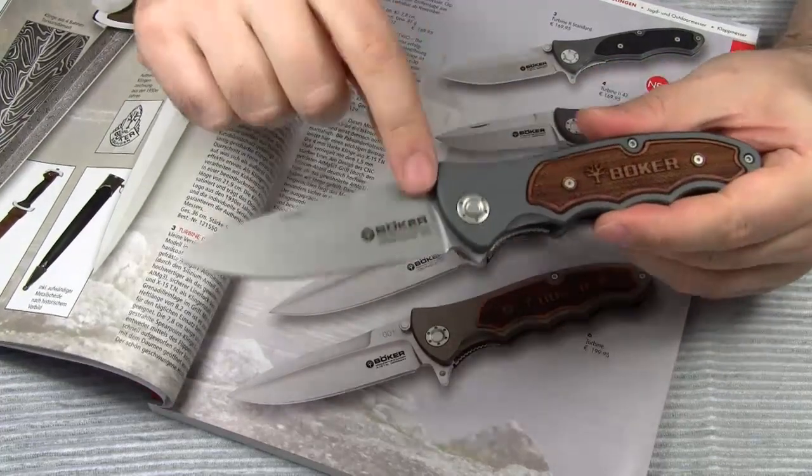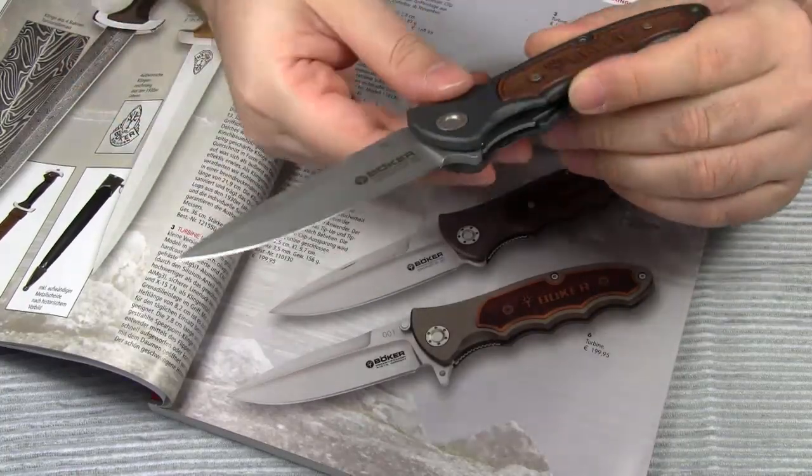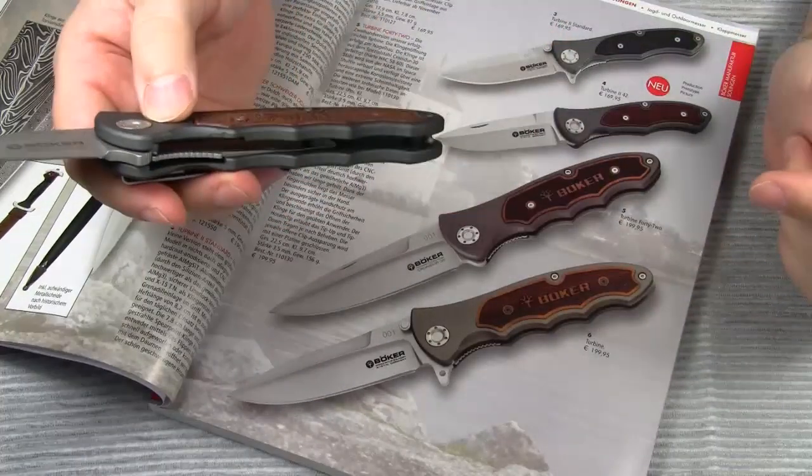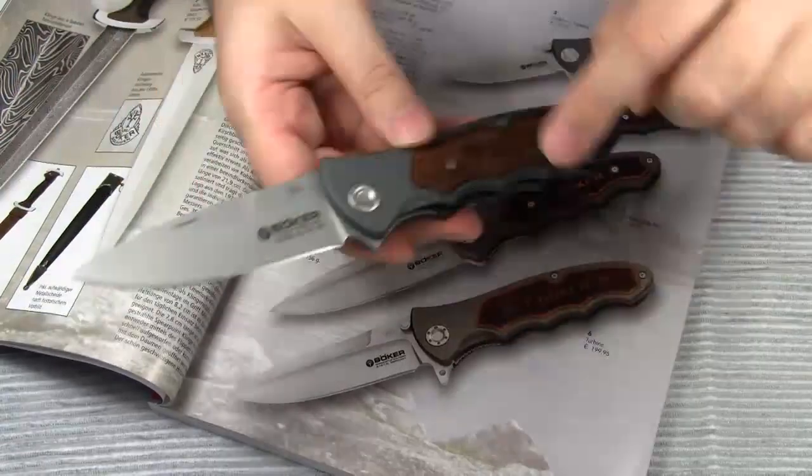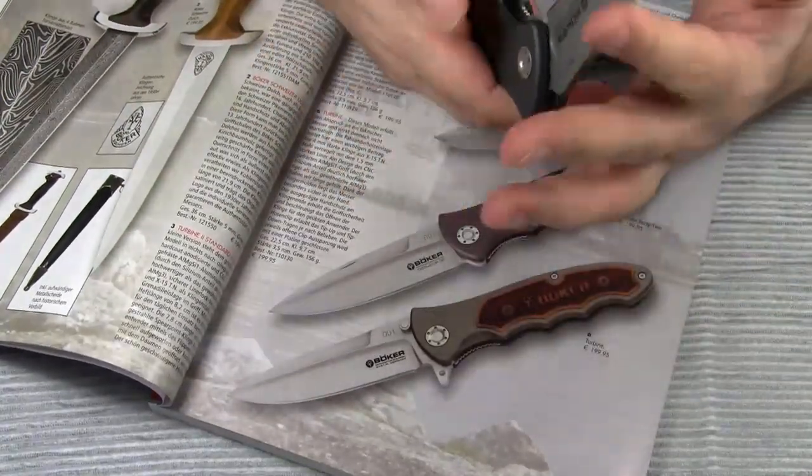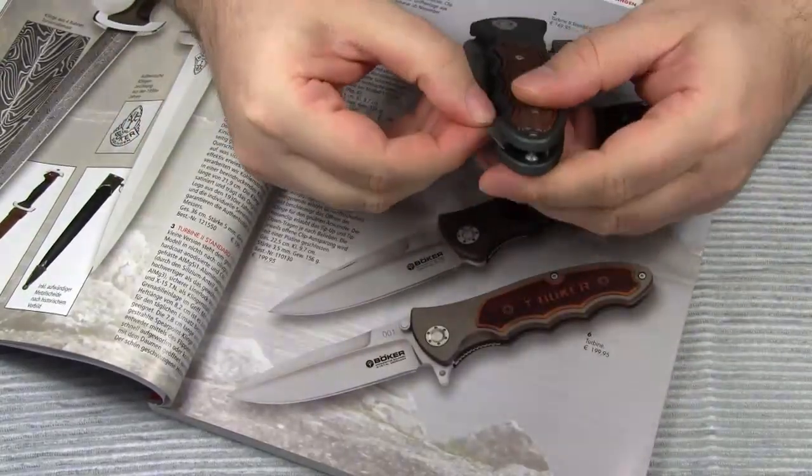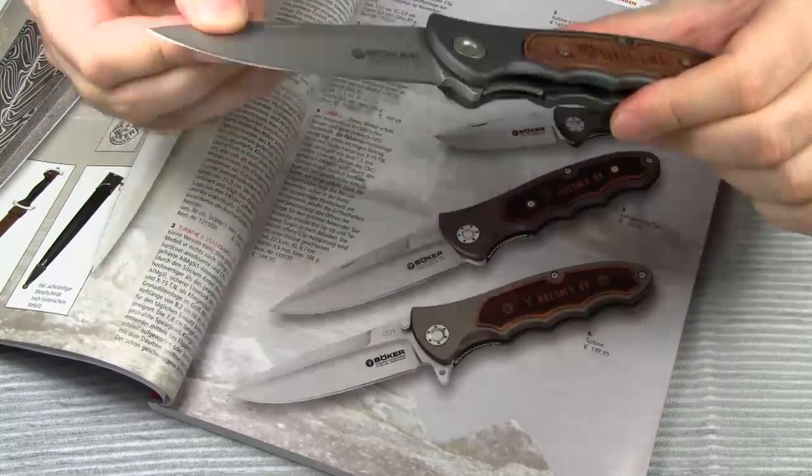Now, what are the main differences between the regular Turbine models and the 42 models? The Turbine 42 doesn't have a thumb stud. Instead it comes with a nail nick. And the 42 model doesn't have a flipper. You can see the flipper here, no flipper here. The lack of these features make it a legal carry knife in Germany because now you need two hands to open it.